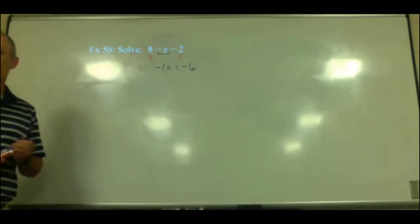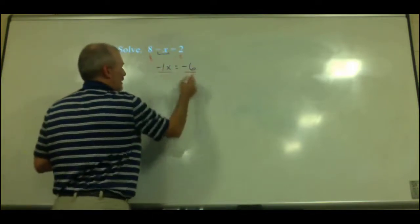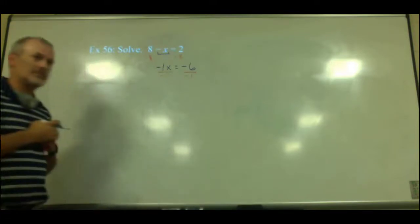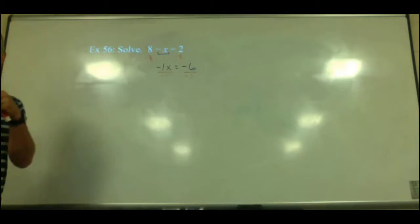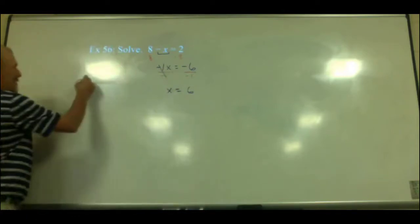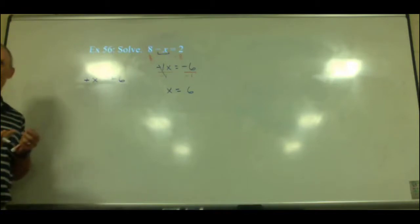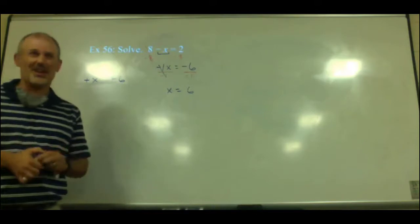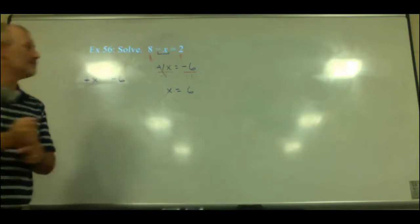How do we get rid of that negative 1? Divide by negative 1 on both sides. When we do that, the negative 1s cancel and we get x equals 6. As a shortcut, if you have a negative in front of x and a negative in front of 6, you can just cancel out the negatives to get x equals 6. The opposite of x equals negative 6 means x equals positive 6.